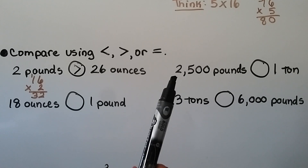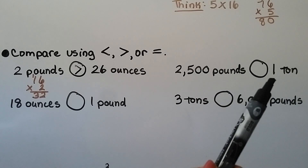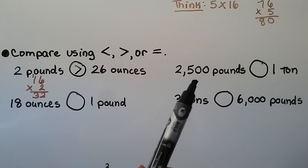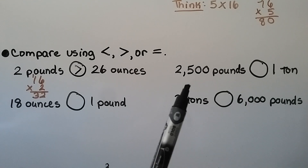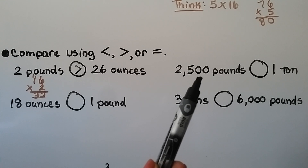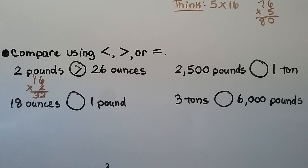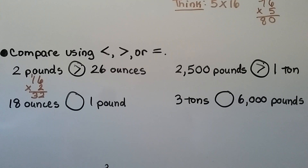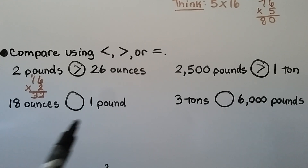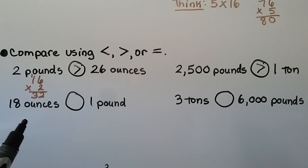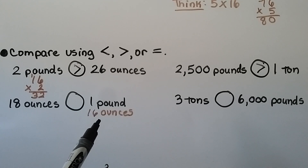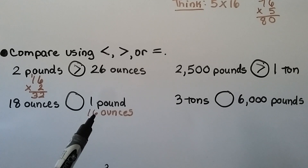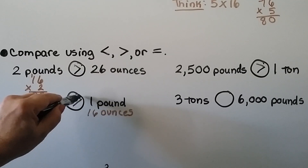Comparing 2,500 pounds to one ton: since 2,000 pounds equals one ton, 2,500 pounds is more than a ton — so 2,500 pounds is greater than one ton. Comparing 18 ounces to one pound: converting one pound to 16 ounces, we compare 18 ounces to 16 ounces. Eighteen is greater than 16, so 18 ounces is greater than one pound.